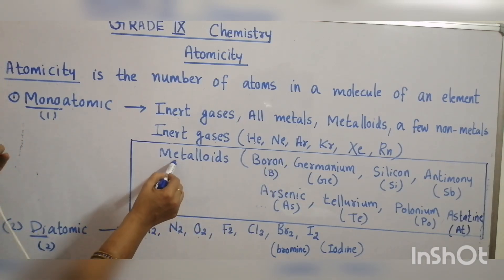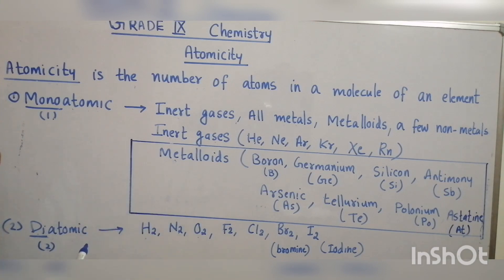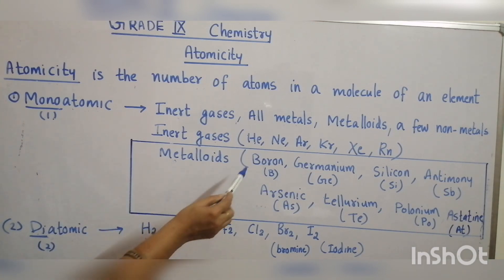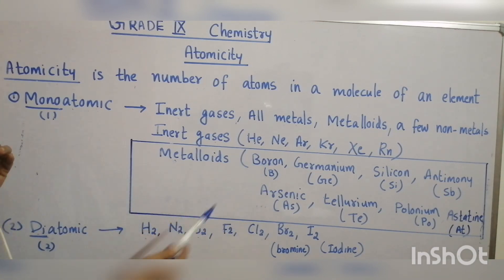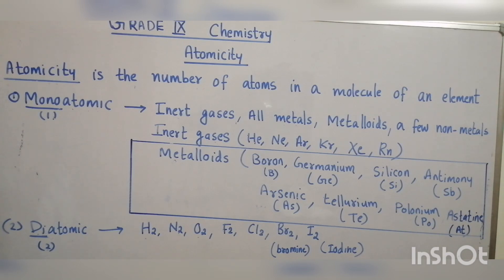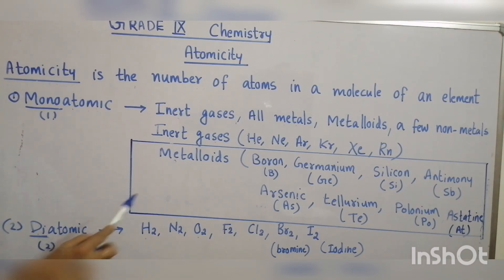The metalloids present in the periodic table are boron, germanium, silicon, antimony, arsenic, tellurium, polonium, and astatine. There are eight metalloids present in the periodic table.